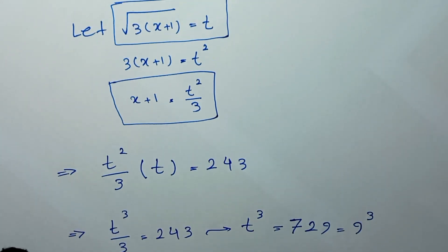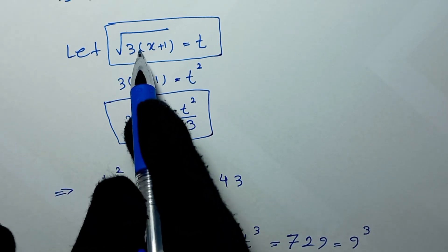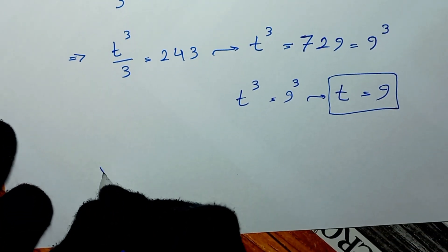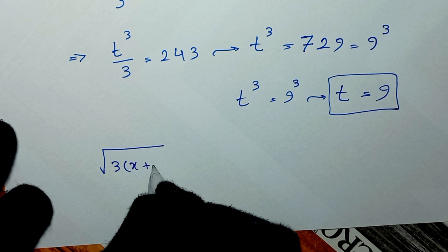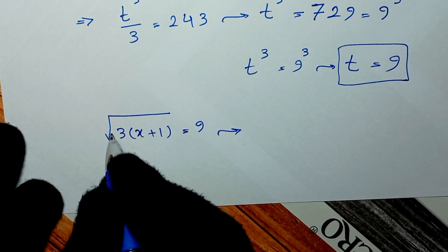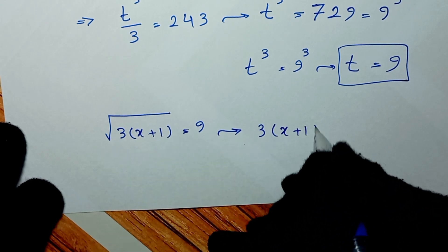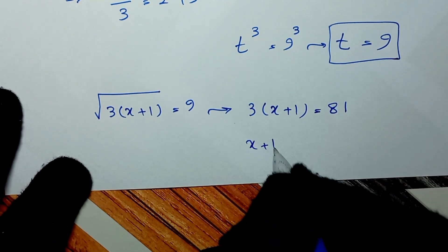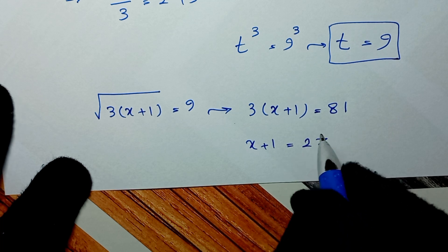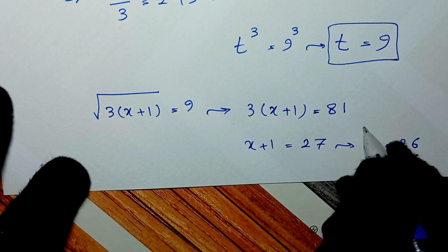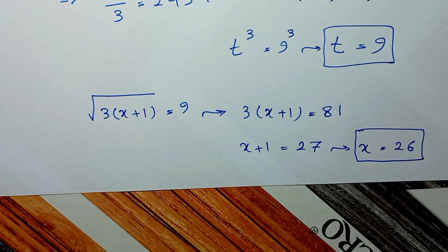In the next step, we recall that square root of 3 times x plus 1 equals t, and t is 9. We raise both sides to the power of 2, giving 3 times x plus 1 equals 81. Dividing both sides by 3 gives x plus 1 equals 27, so x is equal to 26. This is our final answer. Thank you for watching — don't forget to like and subscribe. See you in the next video, goodbye!